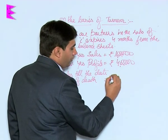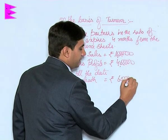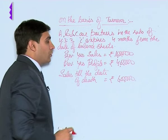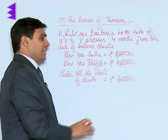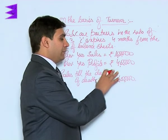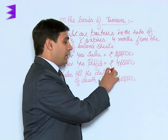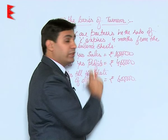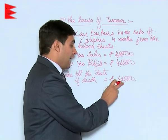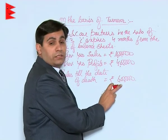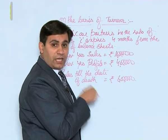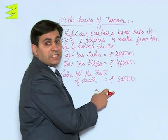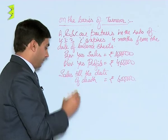In the previous year, a profit of rupees four lakhs was earned on sales of ten lakhs. Sales till the date of death — that is, in the current accounting period — are equal to rupees six lakhs.